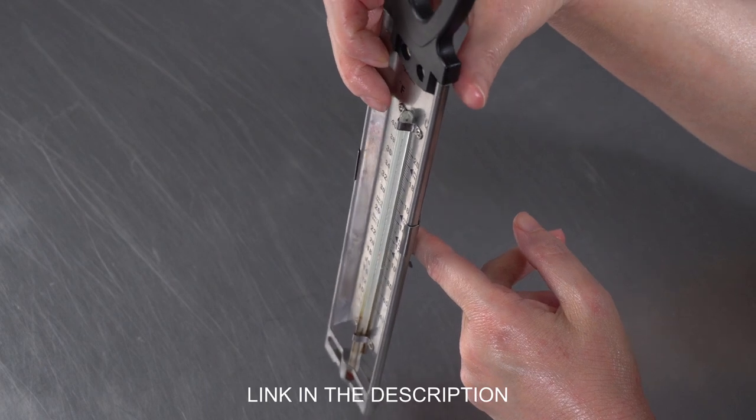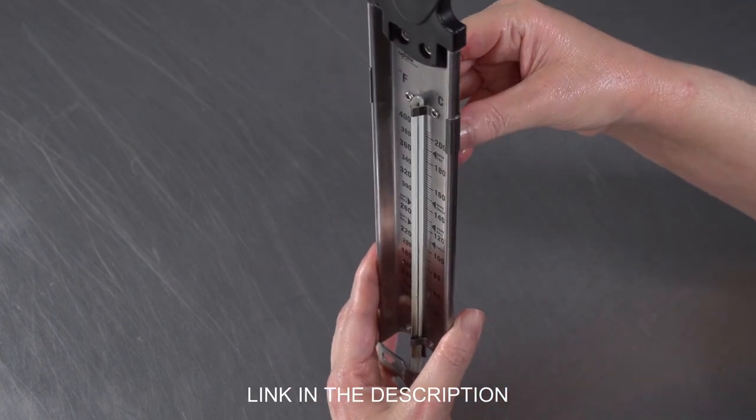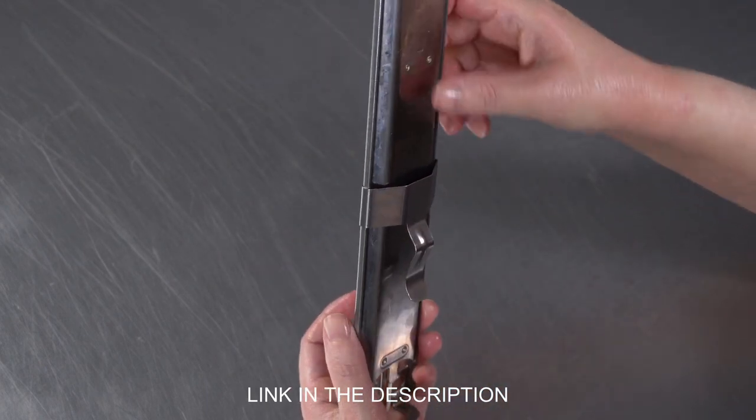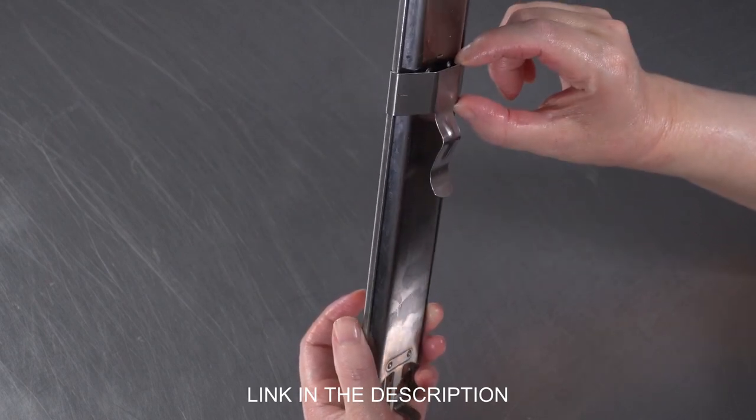You just hook it over the side of the pot, and you can adjust it up and down based on the height and size of the pan you're using.